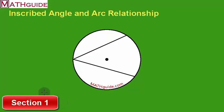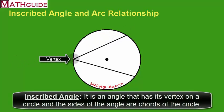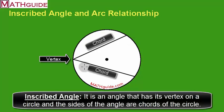Alright, in this first section, we're going to talk about what an inscribed angle is. I have a picture here of an inscribed angle. An inscribed angle is one in which the vertex of the angle — that's the corner — is resting on the circle, and the sides of the angle are chords of the circle. There is our inscribed angle.